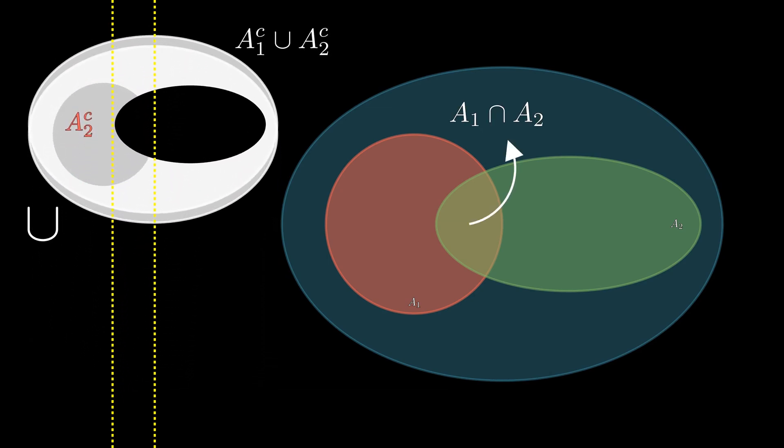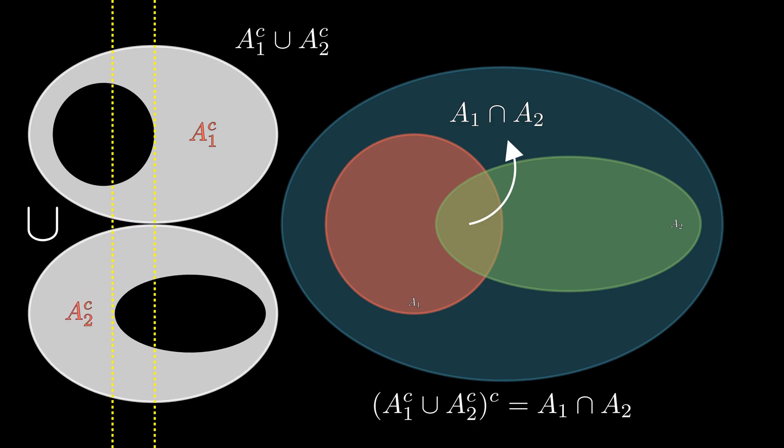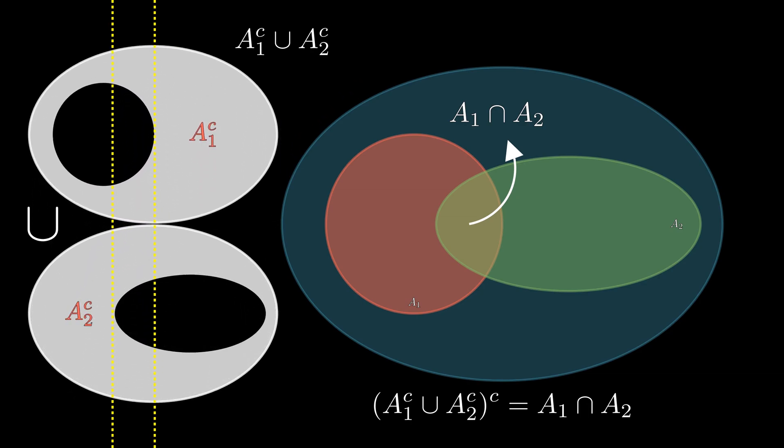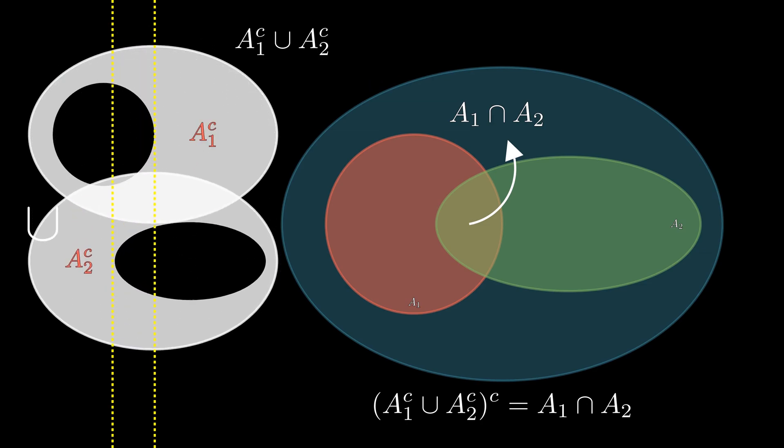And that region is exactly the intersection between A1 and A2. So we found that there is one region specifically where A1 complement and A2 complement do not overlap. And that is exactly the intersection.